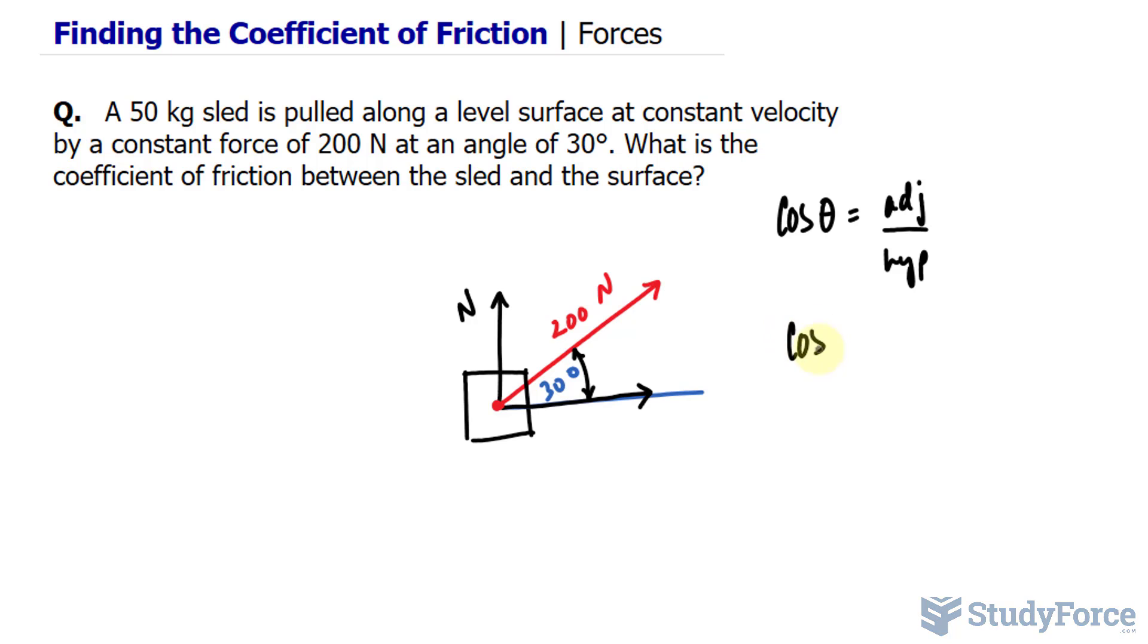Let's fill this in. We have cosine of 30 degrees equals adjacent, which is what we're looking for. That's the horizontal force, so I'll represent it as ADJ for adjacent, and that is over the hypotenuse of 200. Rearranging this formula by multiplying both sides by 200...